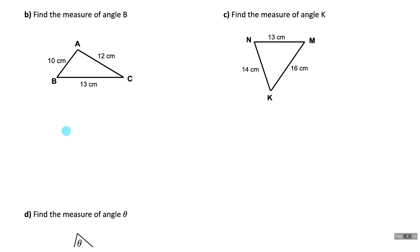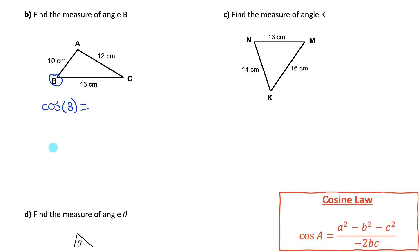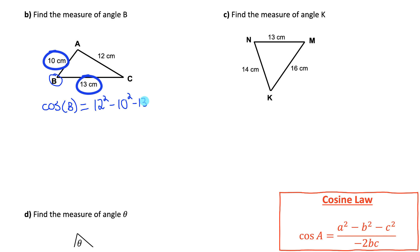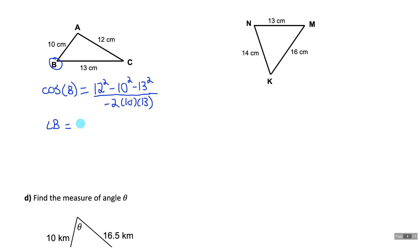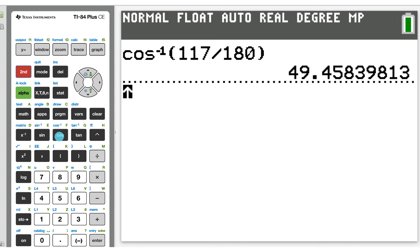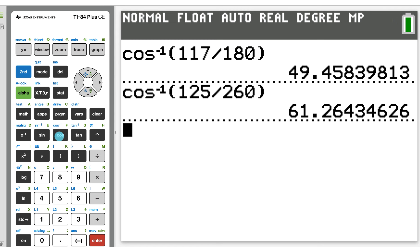To find angle B with sides 12, 10, and 13: cosine B = (12 squared minus 10 squared minus 13 squared) / (negative 2·10·13). The numerator simplifies to negative 125 and the denominator to negative 260. Taking inverse cosine of 125/260 gives angle B ≈ 61.26 degrees.